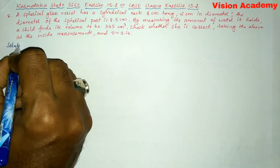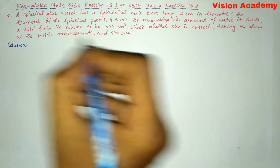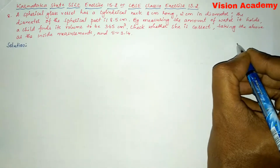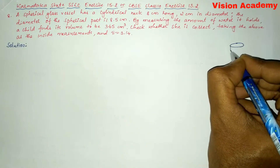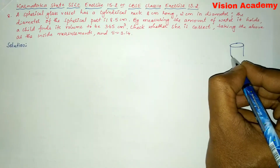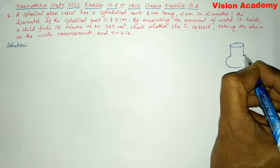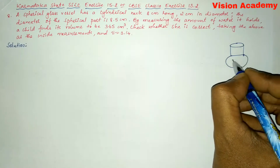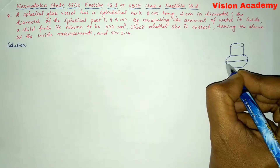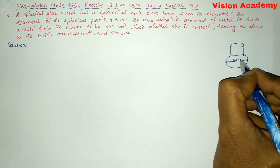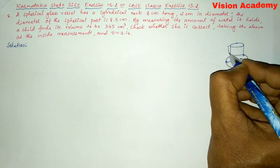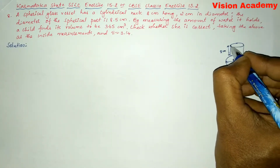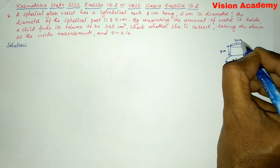Now let us find the solution for the given problem. Let us draw a spherical glass vessel with a cylindrical neck — a cylindrical neck with a spherical bottom. Here they have given the diameter of the spherical bottle as 8.5 cm, the height of the cylindrical neck as 8 cm, and the diameter of the cylindrical neck as 2 cm.